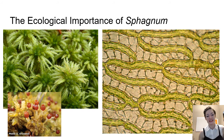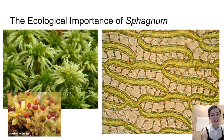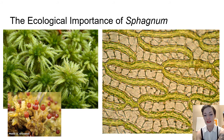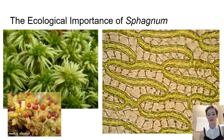Here's what sphagnum looks like and what its cells look like. We see the gametophyte — this leafy green in the upper left — a really cute, pom-pom-like gametophyte. The sporophytes have these little capsules that look like olives, and it has an operculum that it shoots off. If we look deep at the cells, we can see all these compartments where water can be stored — this is why it has that water-holding ability.